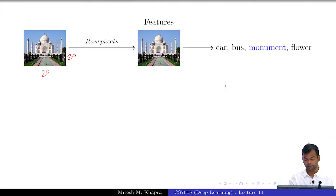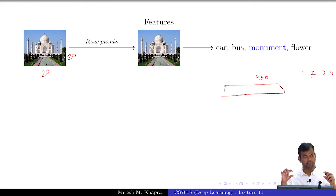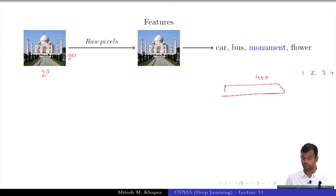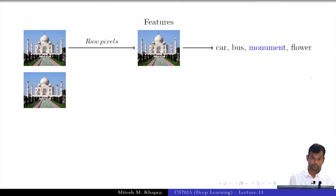So you have a simple input — you are given one million images, all 400-dimensional, coming from one of four classes: car, bus, monument, and so on. You can just treat this as an input feature vector and do your classification. That is the simplest thing. Or else, what you could do is some kind of feature engineering.